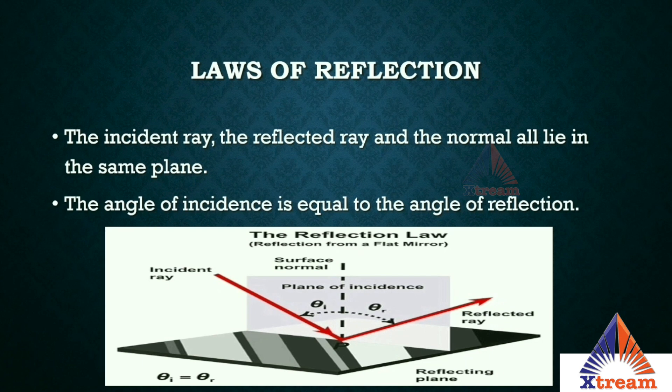The second law of reflection states that the angle of incidence is equal to the angle of reflection. The angle between the incident ray and the normal is the angle of incidence, shown as theta-i in the figure. The angle between the normal and the reflected ray is the angle of reflection, shown as theta-r. Theta-i must always equal theta-r.